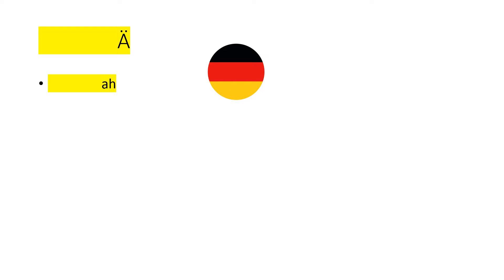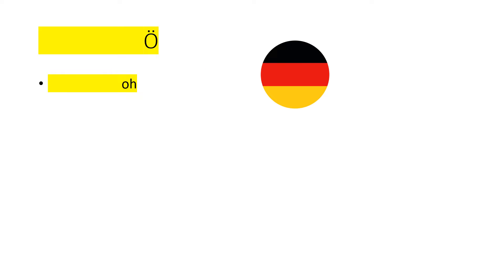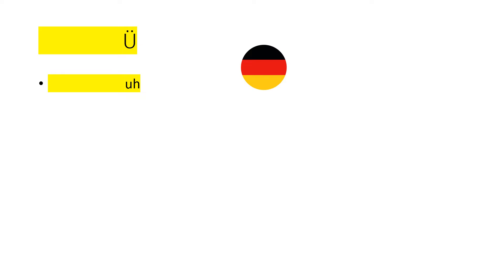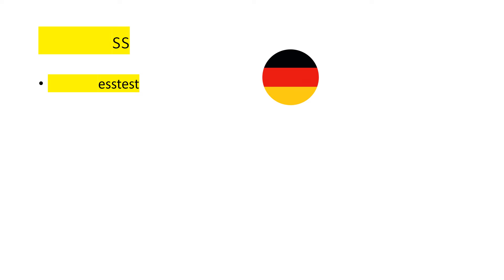You know, German has an extra five umlauts, like A umlaut, U umlaut.